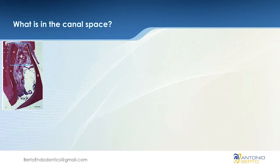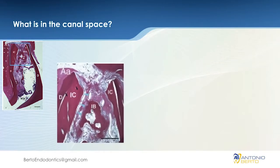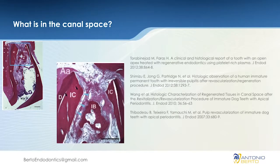On this histological slide, we can see what happens inside the canal. Unfortunately, in dog studies — which is where we've been able to examine this — what we're seeing is not true pulp tissue, but cementum-type tissue and bone-like tissue. The black arrows indicate cementocytes, which are precursors of cemental cells, and the blue lines show cementoblasts creating cementum.